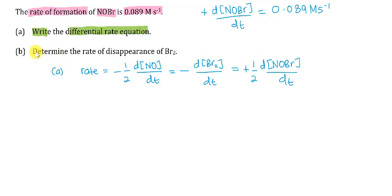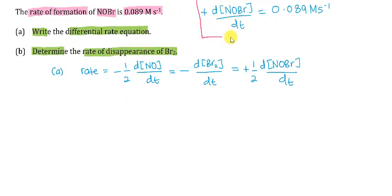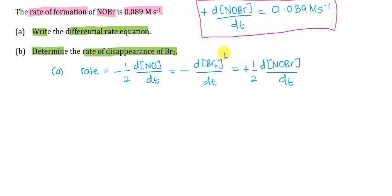For part B, determine the rate of disappearance of bromine. We already have our rate of formation of NOBr, which is 0.089 molar per second. So we need the rate of disappearance of bromine.